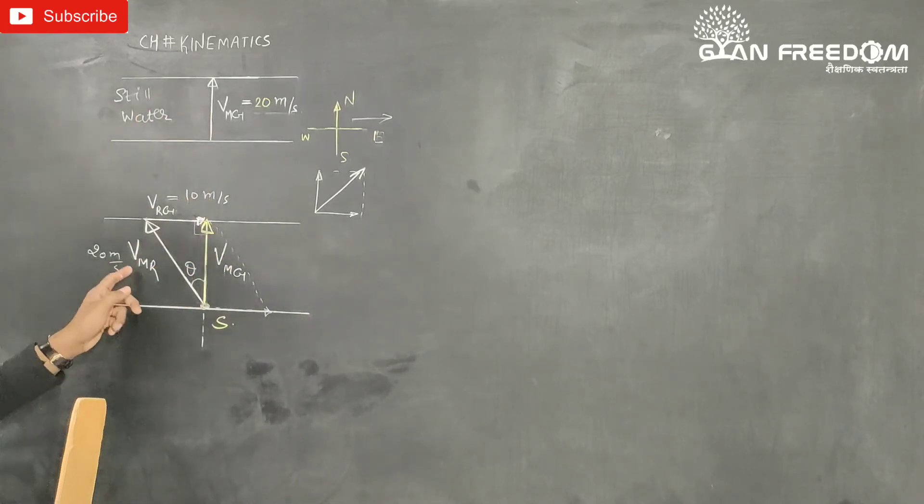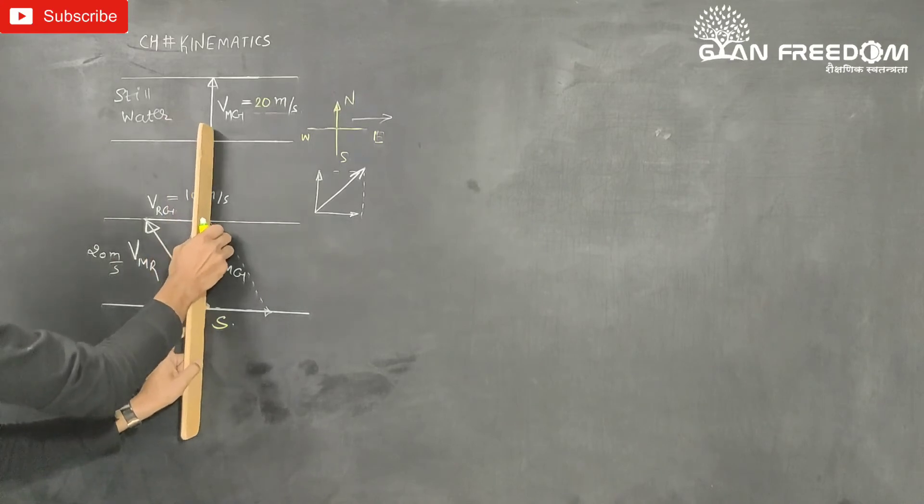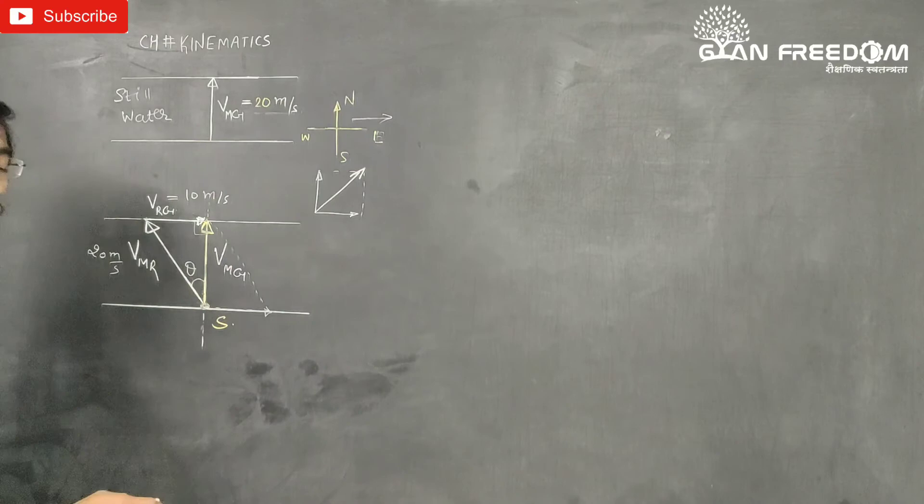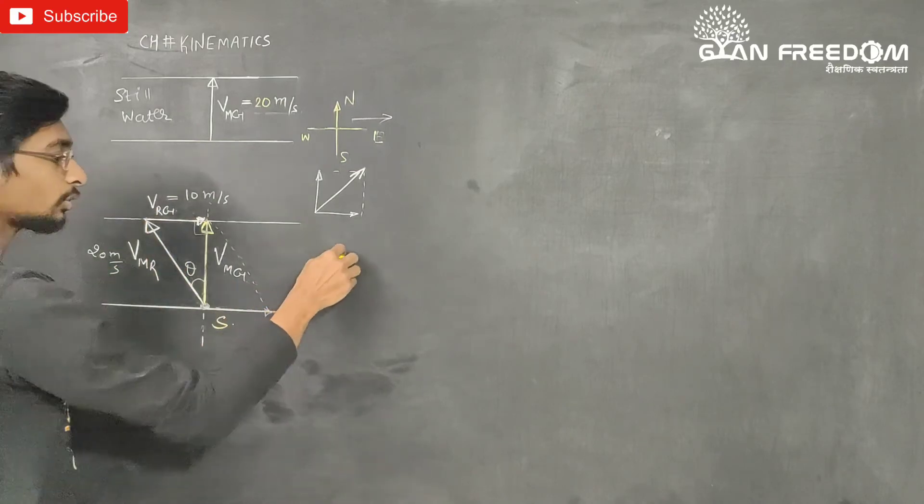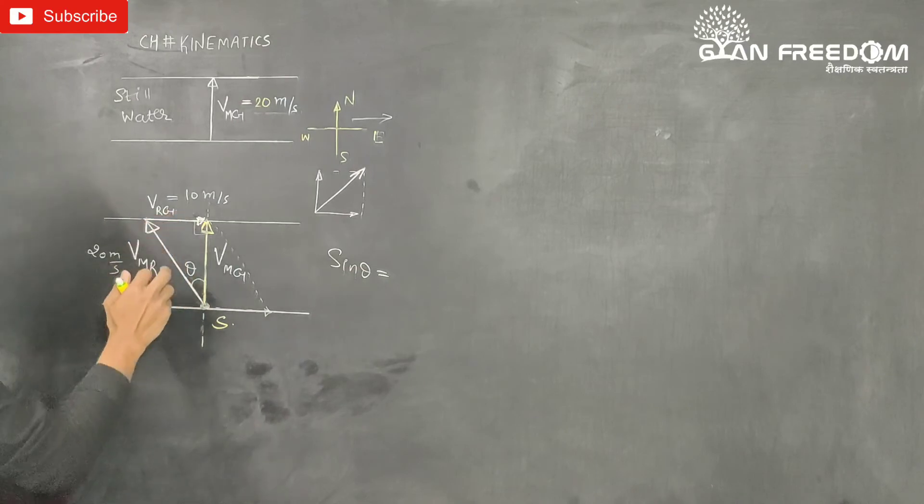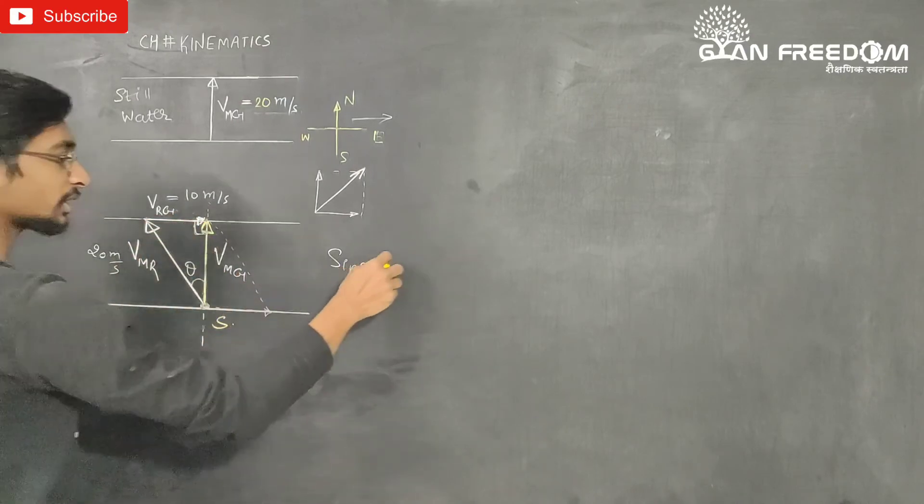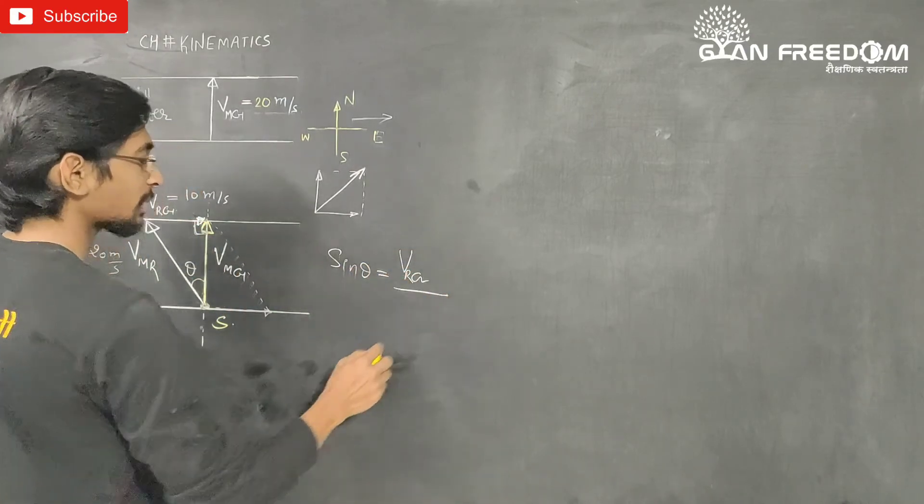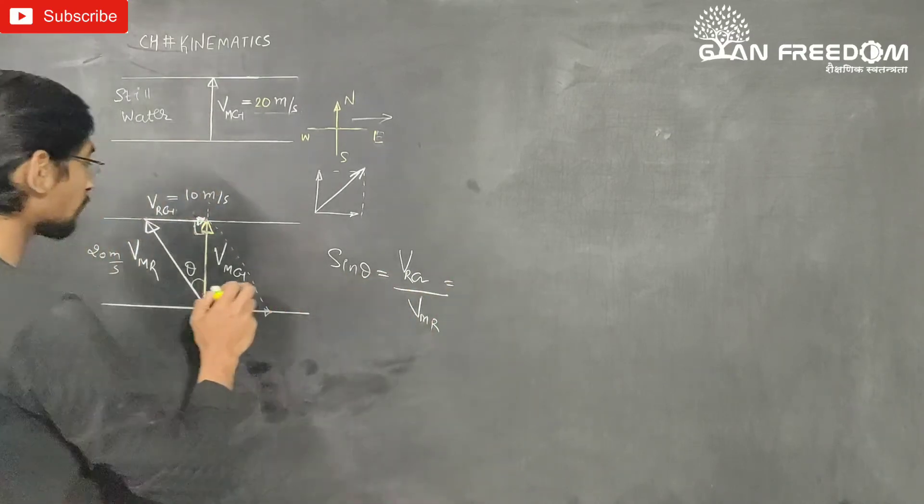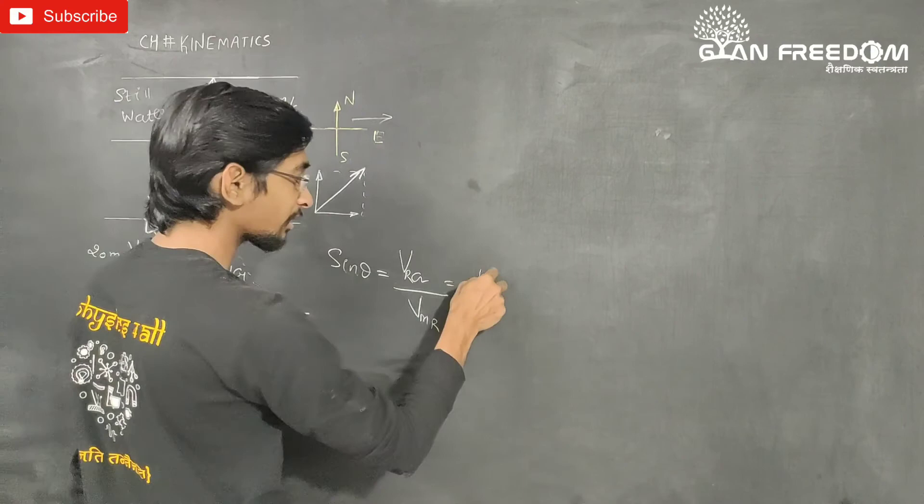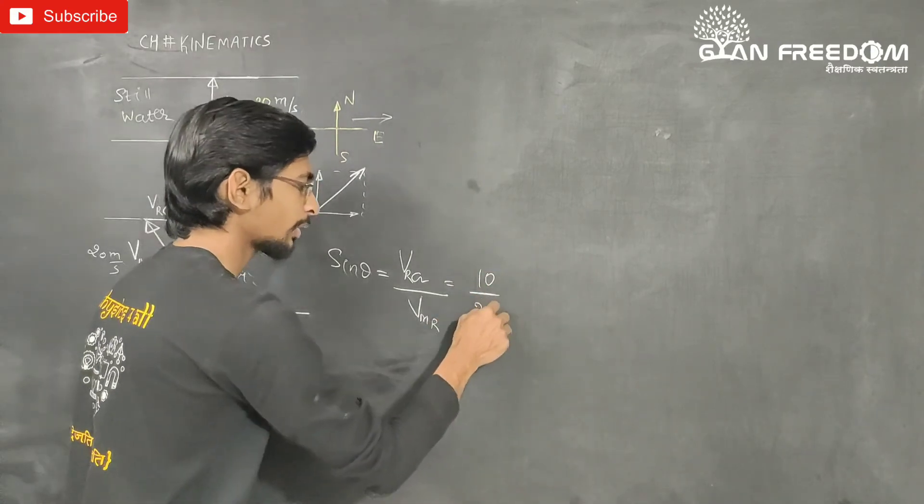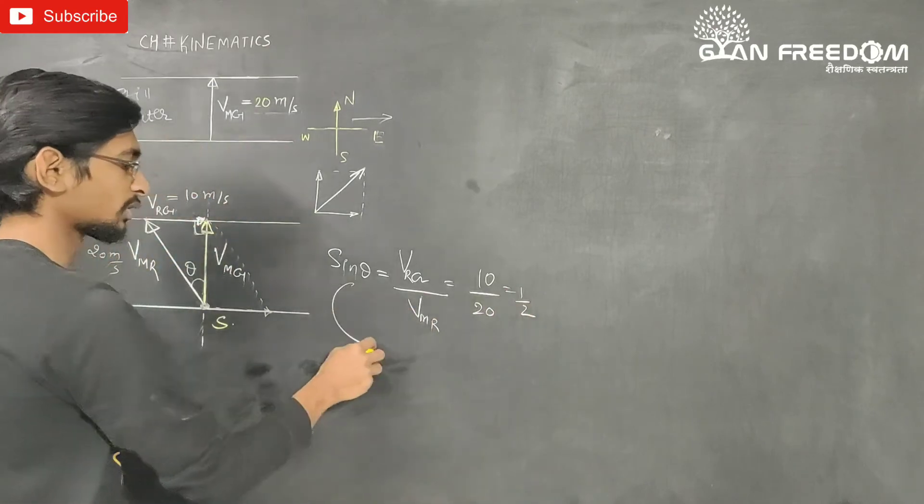Velocity of man due north. This theta, using geometry, sin theta equals opposite upon hypotenuse. Opposite is velocity of river with respect to ground, hypotenuse is velocity of man with respect to river. Velocity of river with respect to ground is 10, velocity of man with respect to river is 20. Answer is half, and when sin theta is half, 30 degrees.